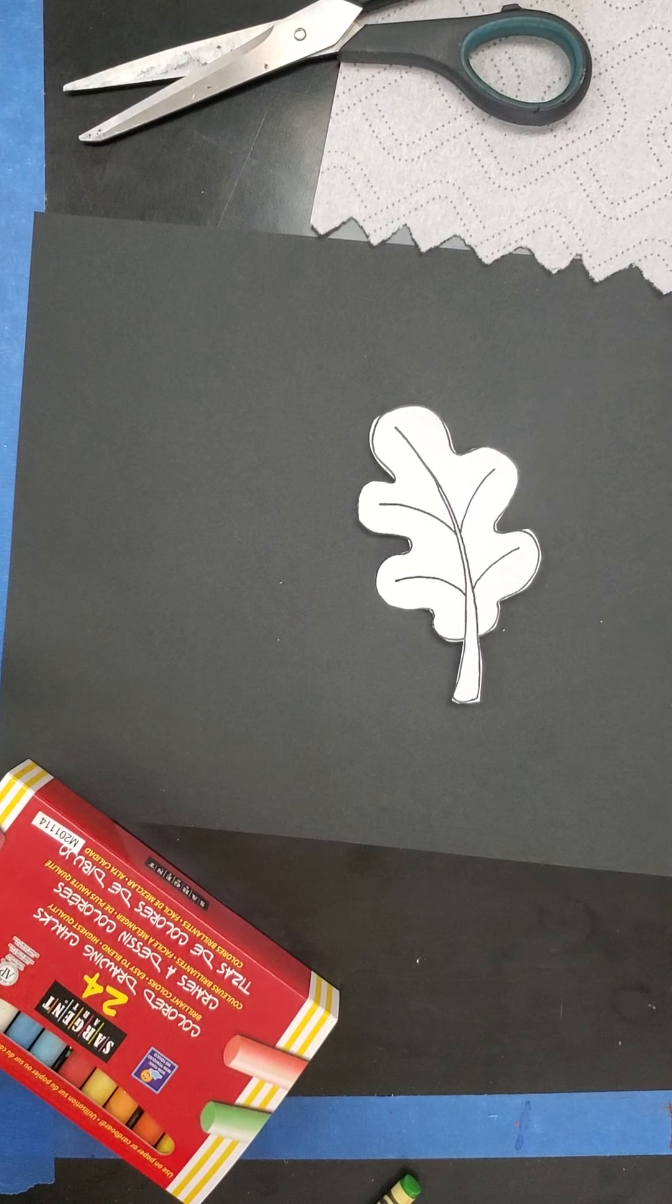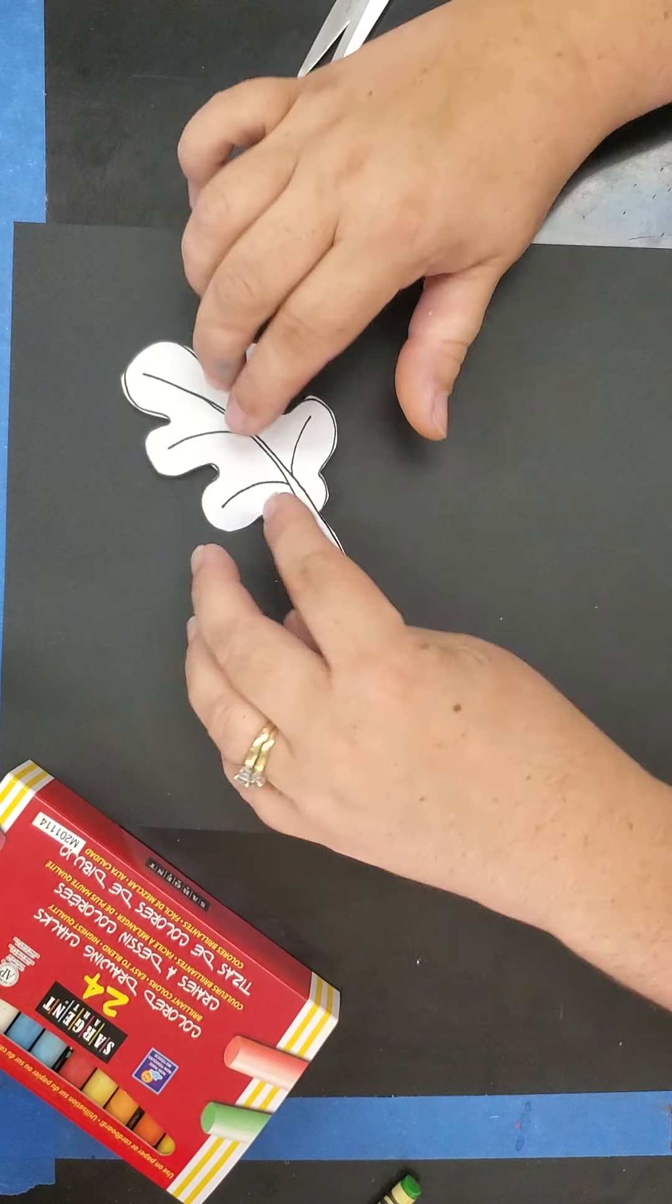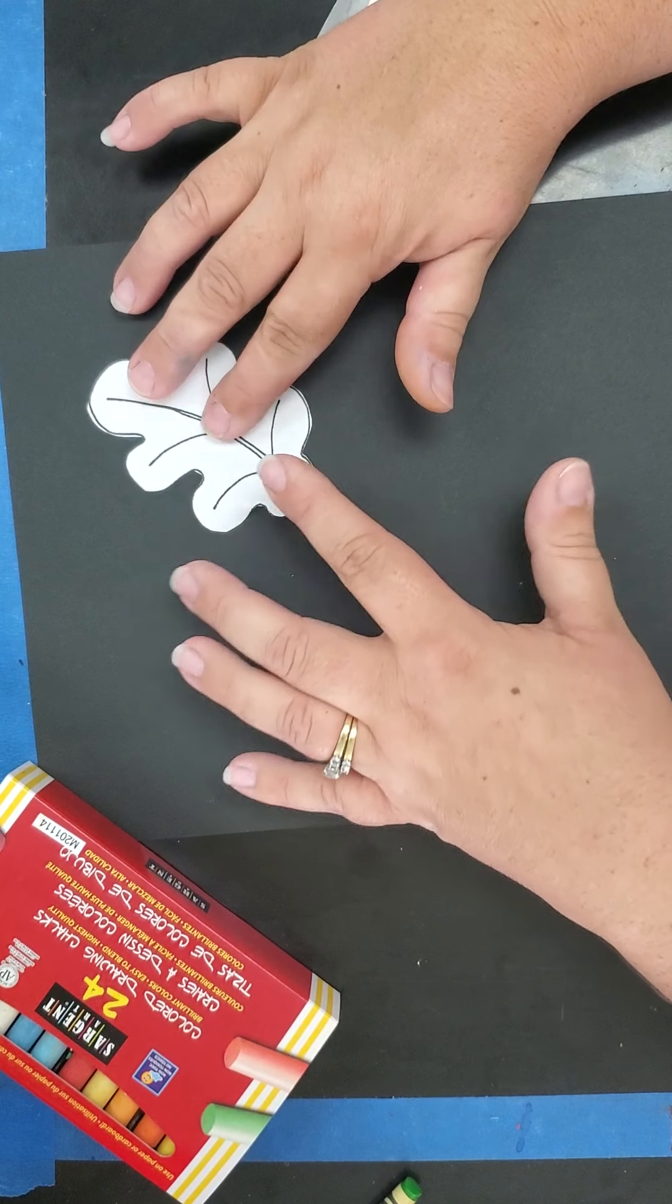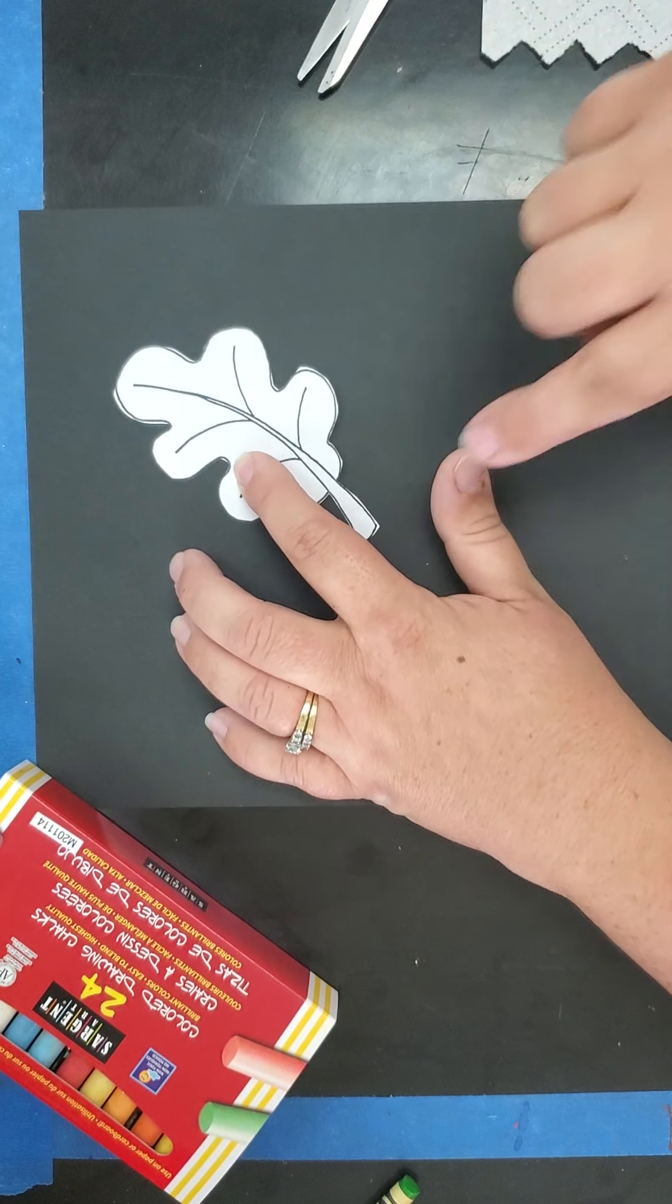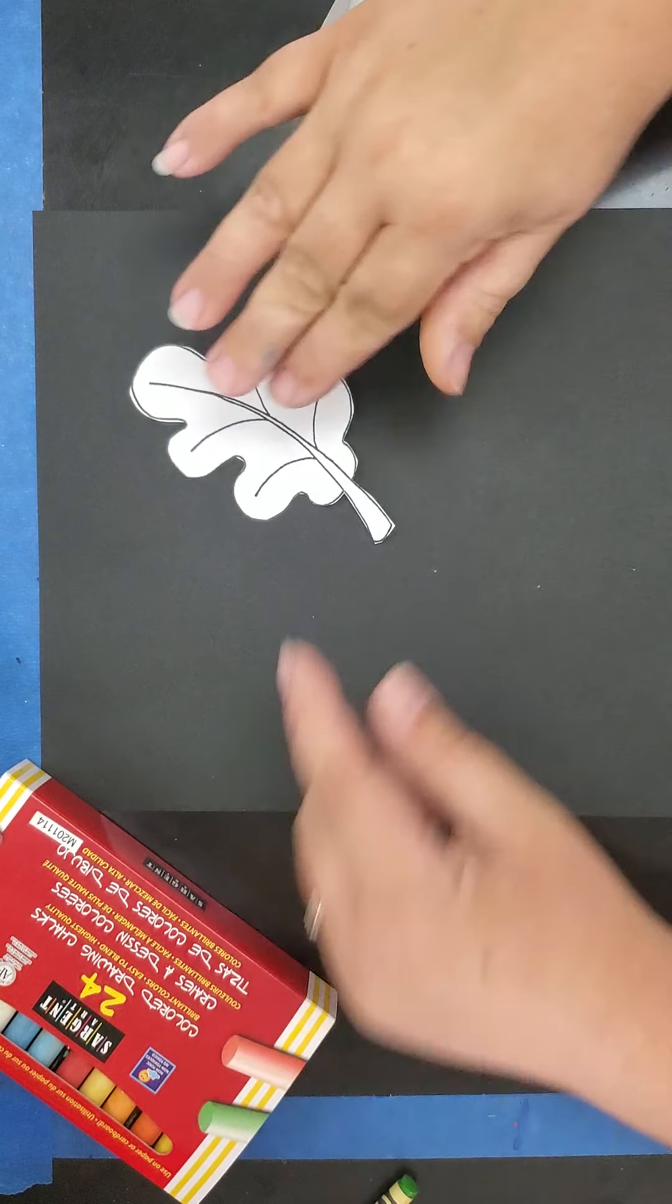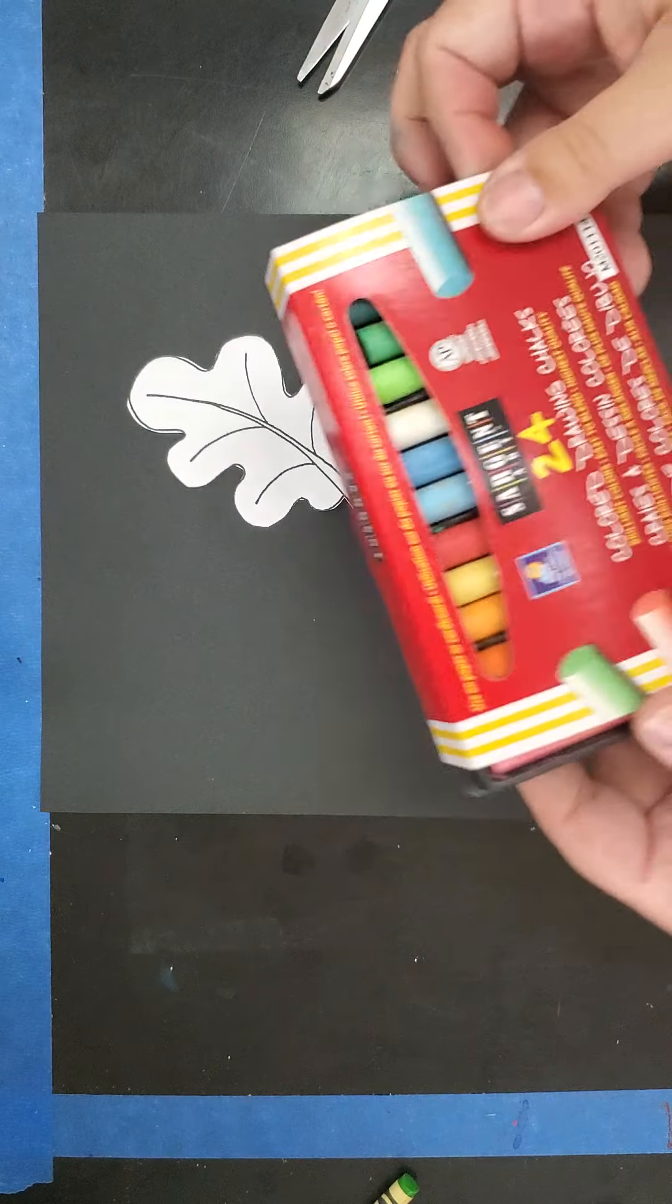All right, artists, I'm back. There's my leaf. It's cut out. What you're going to do is you're going to want to hold it in about the top corner. You can do either corner if you like this one better, but the top corner. You want to leave a little space all the way around it because we're going to use our leaf to make our negative space, and around it is going to be our positive space where our colors are.